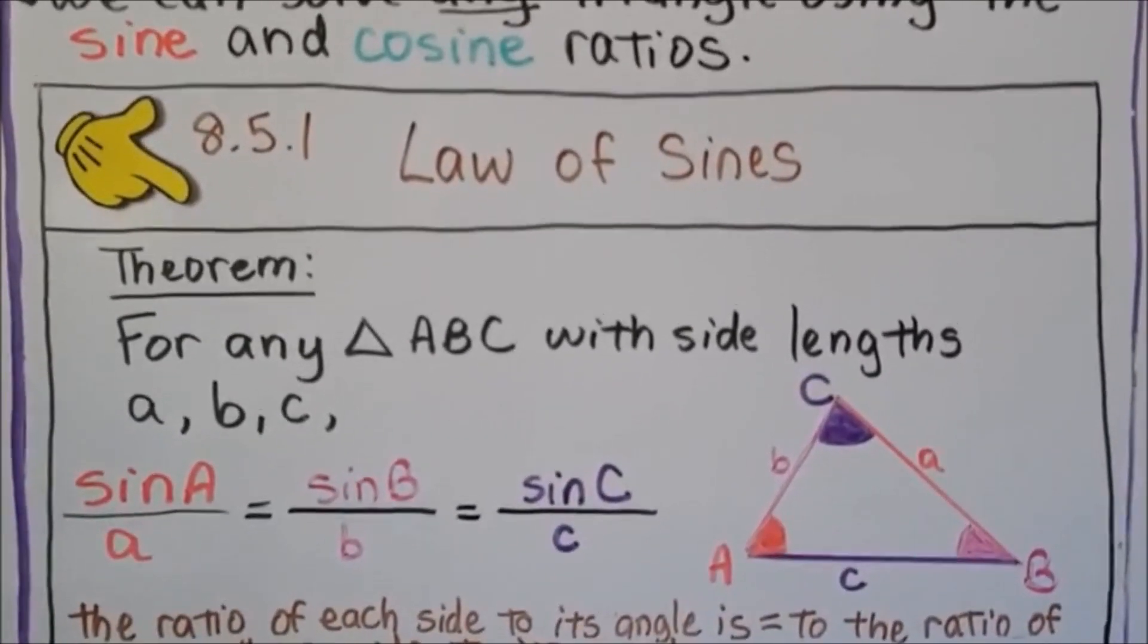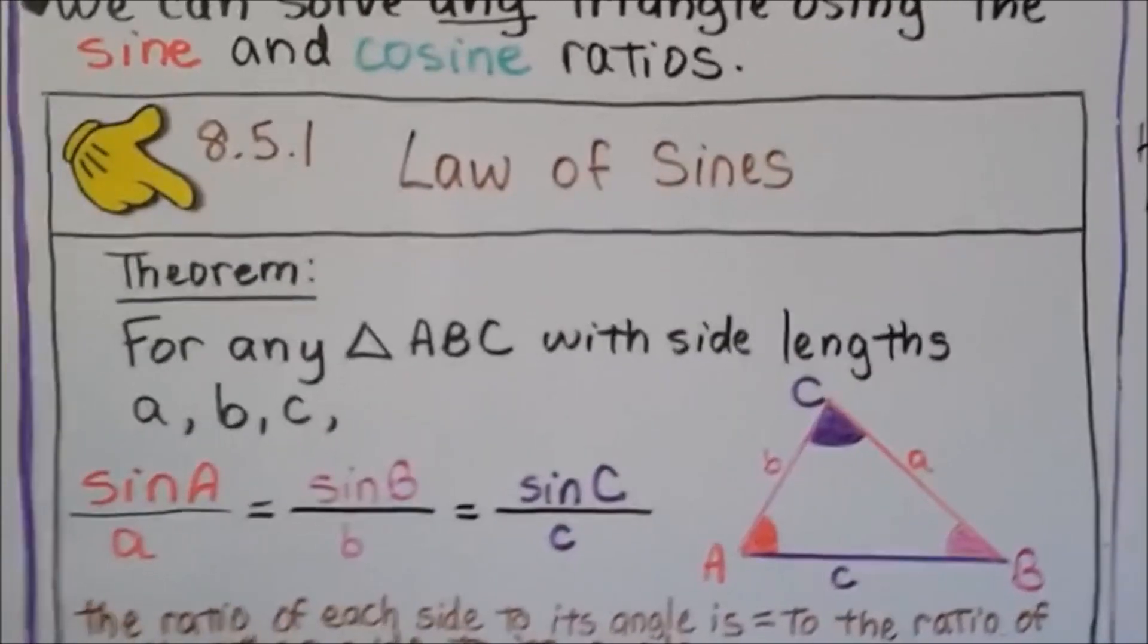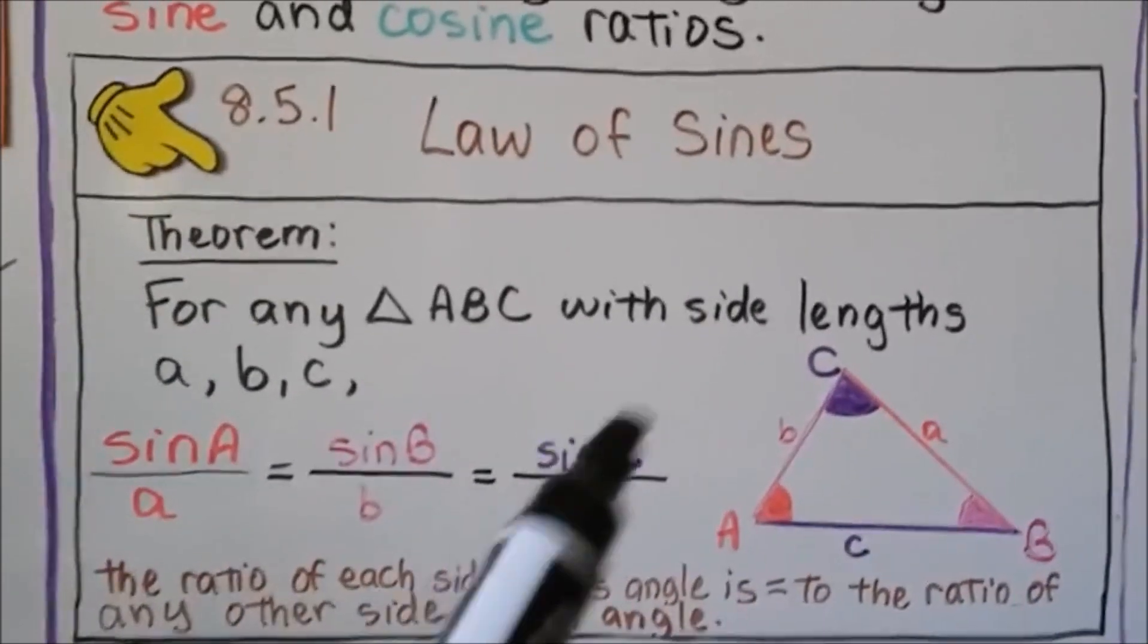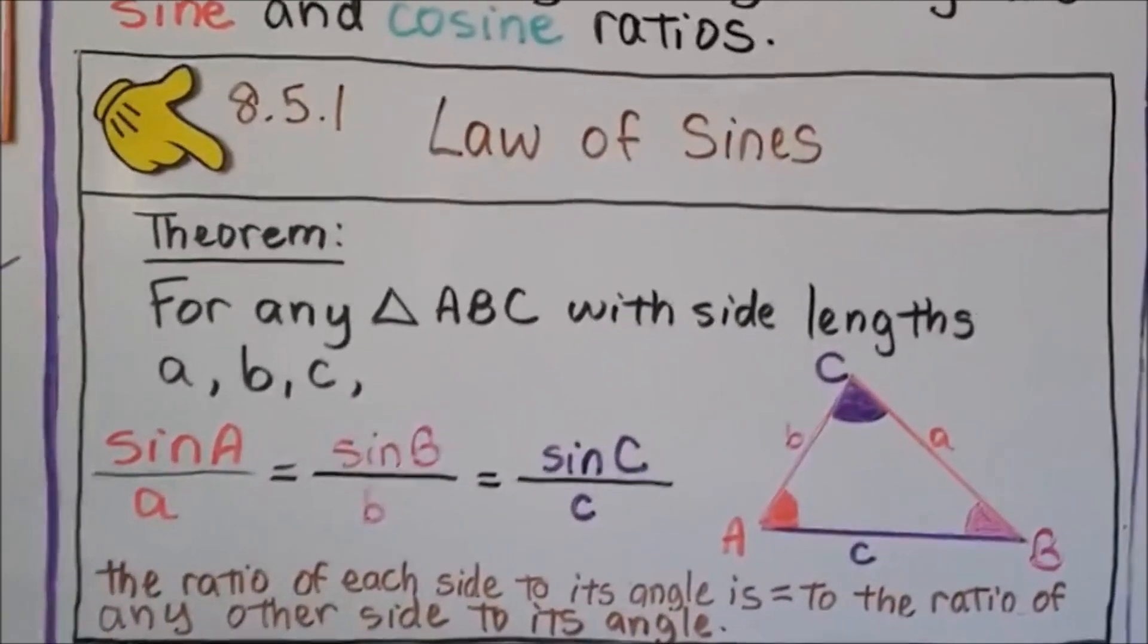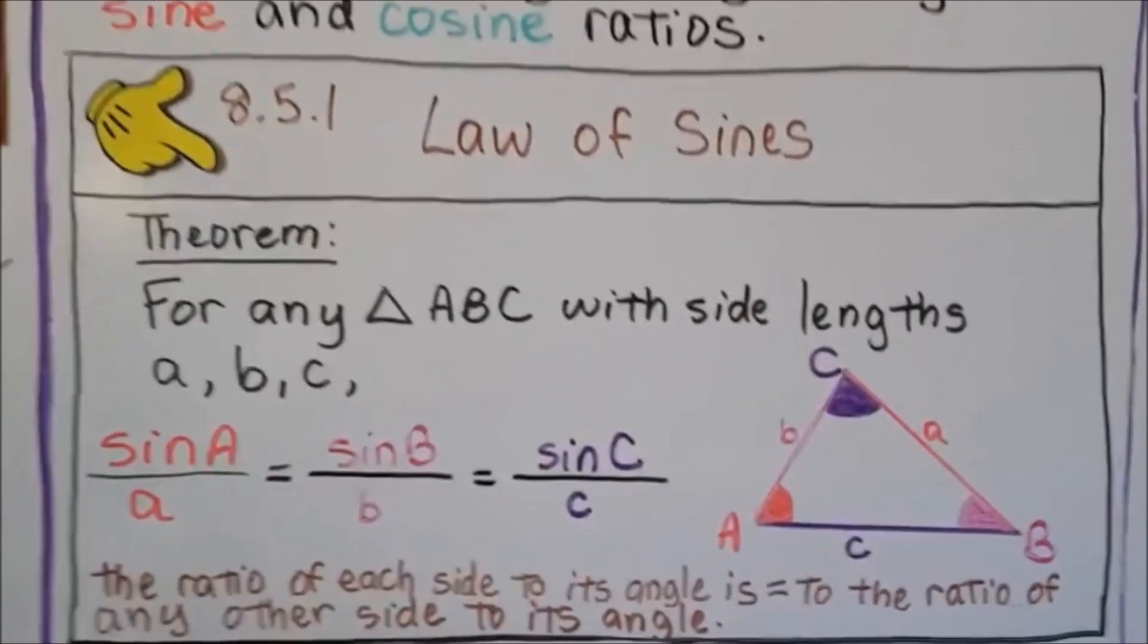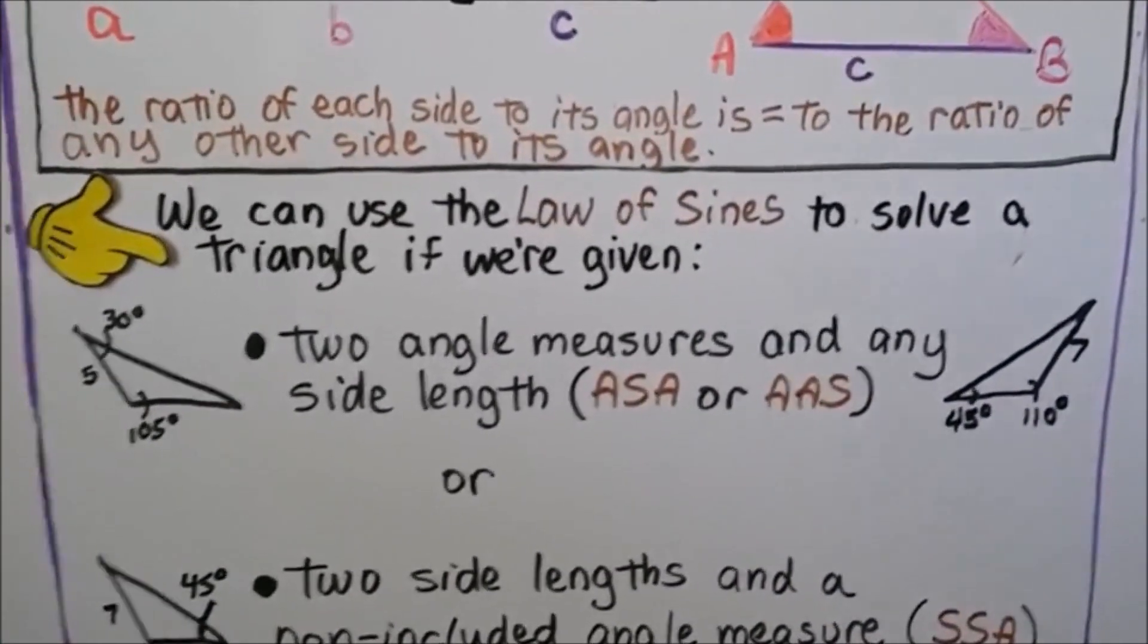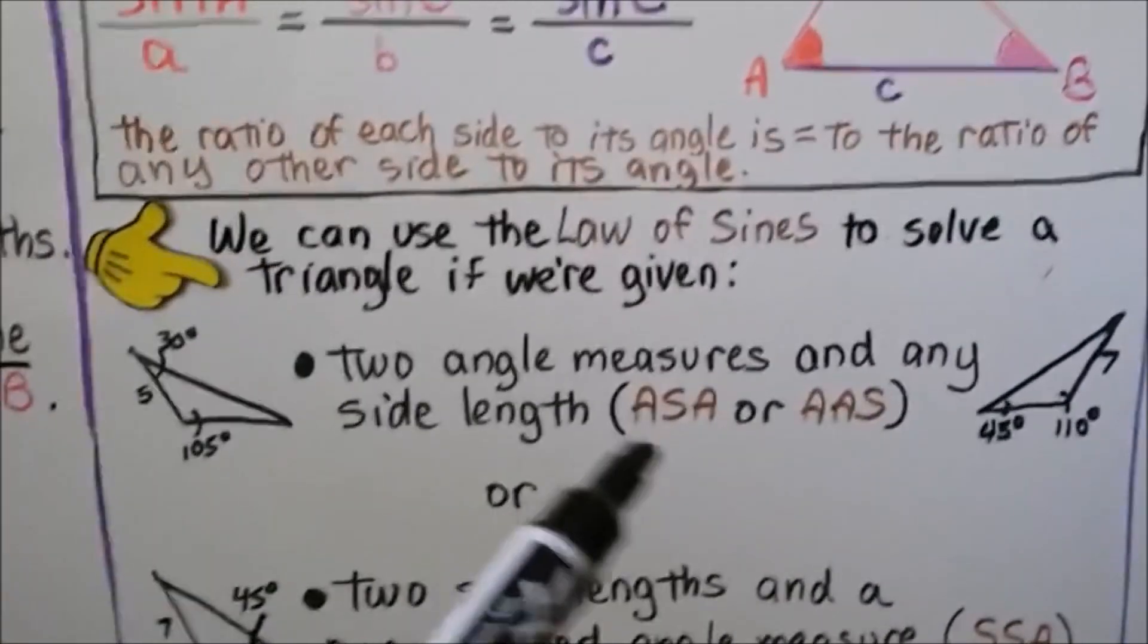The theorem says for any triangle ABC with side lengths a, b, and c, the sine of A over a equals the sine of B over b, which equals the sine of C over c. The ratio of each side to its angle equals the ratio of any other side to its angle. We can use the law of sines to solve a triangle if we're given two angle measures and any side length, ASA or AAS.